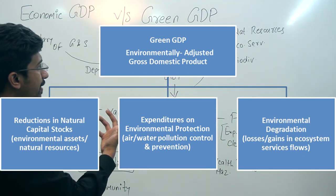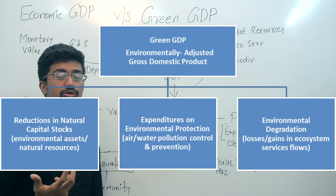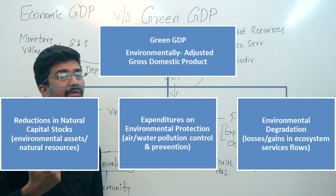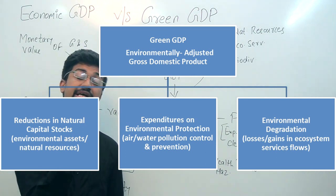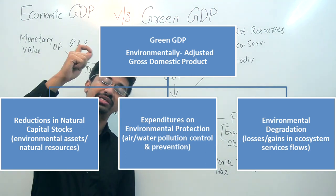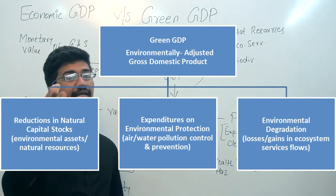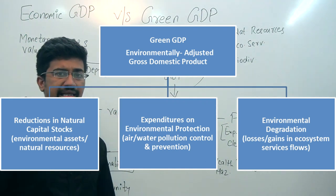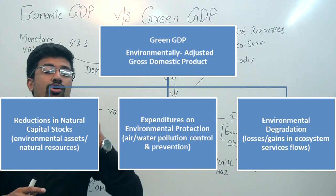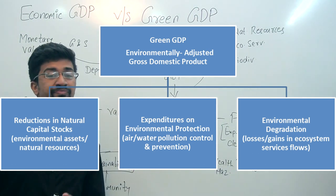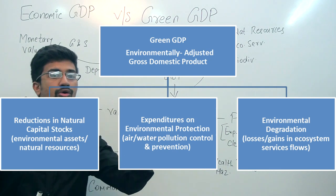Natural capital can be depleted when you focus only on economic growth. Green GDP essentially accounts for economic growth while measuring how much natural capital has been depleted. Economic growth can be adjusted through the Green GDP or natural capital lens.